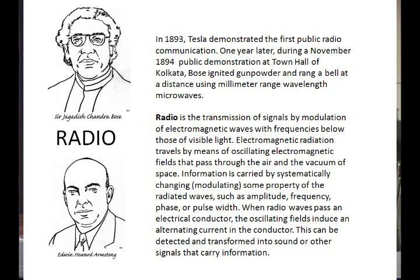Radio is the transmission of signals by modulation of electromagnetic waves with frequencies below those of visible light. Electromagnetic radiation travels by means of an oscillating electromagnetic field. It passes through the air or a complete vacuum — you don't need atoms for an electromagnetic field to travel. Radio waves have properties such as amplitude, frequency, and phase.